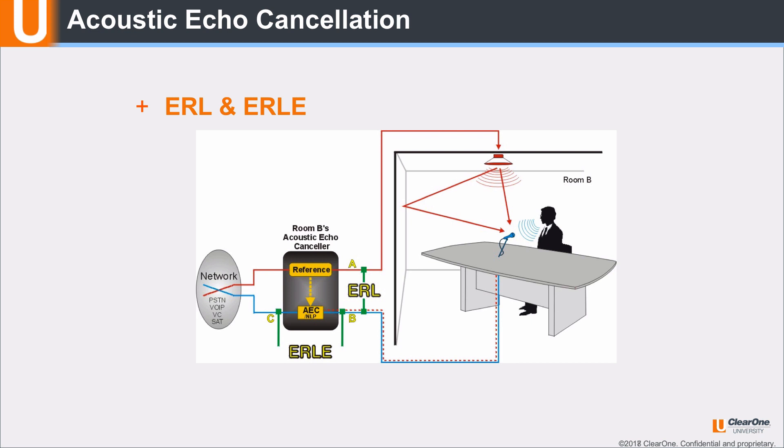E-R-L-E, or echo return loss enhancement, is the loss in level of the acoustic echo that the echo canceler adds. The difference between point B and C.